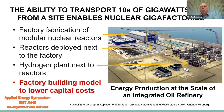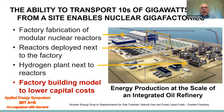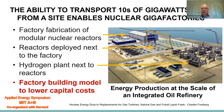The ability to transport tens of gigawatts of hydrogen from a site enables a nuclear gigafactory. We have factory fabrication of the reactors, as shown at the back of the picture. The reactors are deployed next to the factory, and the hydrogen plant is next to the reactors. We go to a factory building model to dramatically lower capital costs. This implies energy production at the scale of an integrated oil refinery — much larger than a conventional power station.